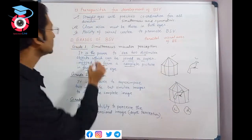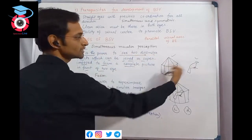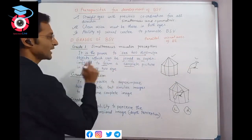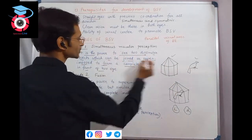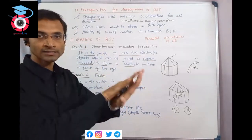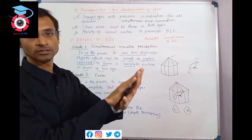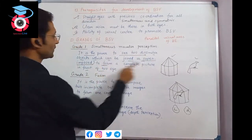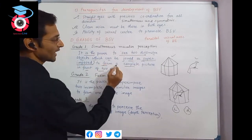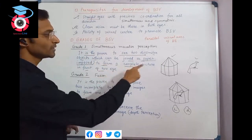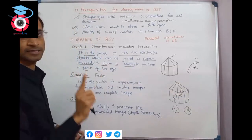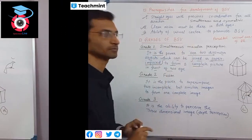Grade 1 is the power to see dissimilar objects - objects which can be joined or superimposed to form a complete picture. Both eyes perceive different but complementary parts that together form a complete image in front of you. That is Grade 1, simultaneous macular perception.